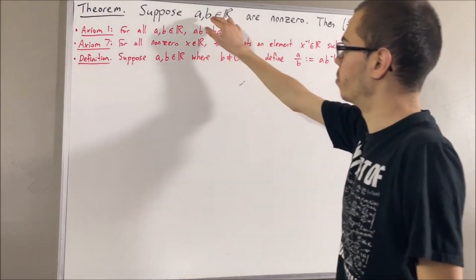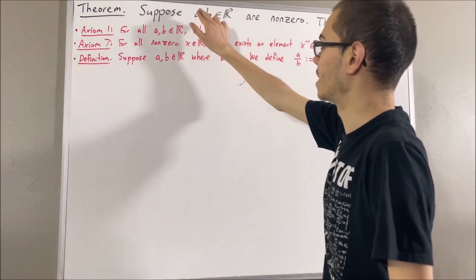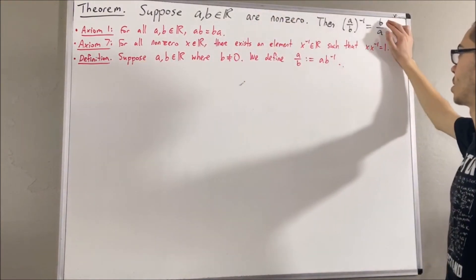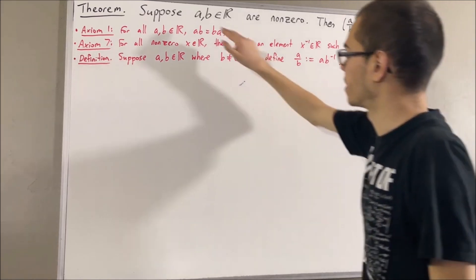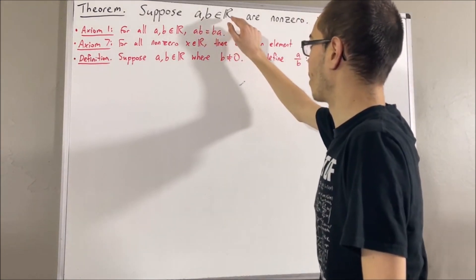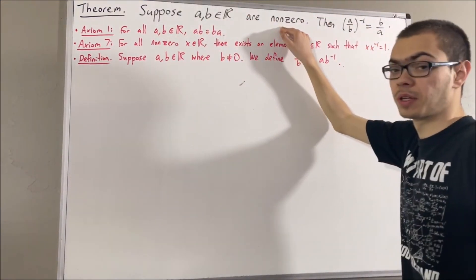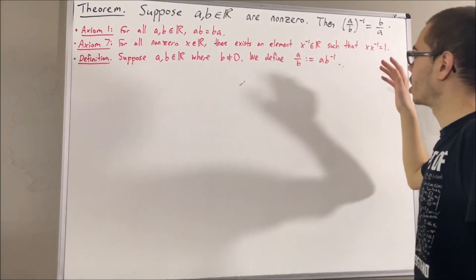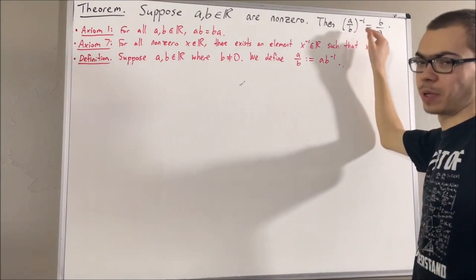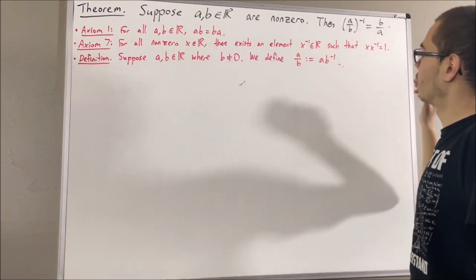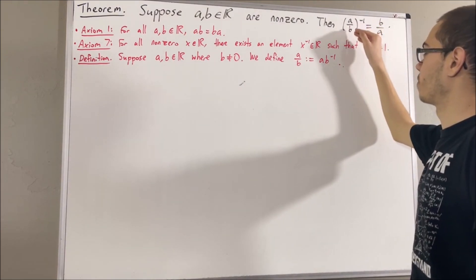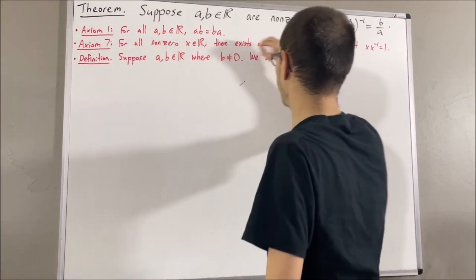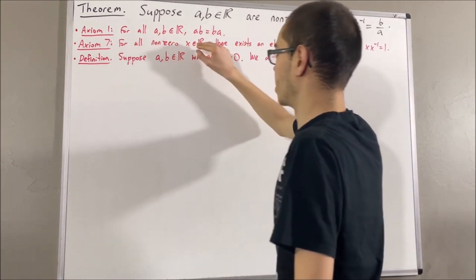Now notice, since B and A are real numbers and A is non-zero, then according to the definition of division, we can make sense out of the expression B over A. And since A and B are real numbers where B is non-zero, then we can make sense out of the expression A over B. But how do we know we can make sense out of the reciprocal of A over B? Well, to make sense out of the reciprocal of A over B, we need A over B to be non-zero, because according to axiom 7, we can only take the reciprocal of non-zero real numbers.